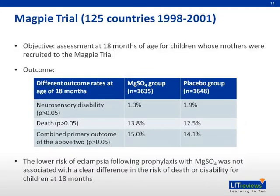The MAGPIE trial — the Magnesium Sulfate for the Prevention of Eclampsia trial — was conducted from 1998 to 2001 in around 125 countries, to evaluate the effectiveness of magnesium sulfate as an anticonvulsant for preeclamptic patients. The MAGPIE trial results show that magnesium sulfate halves the risk of eclampsia and reduces the risk of maternal death, and there do not appear to be substantial harmful effects to mother or baby in the short term. In the follow-up trial on children born to preeclamptic mothers, assessment of long-term effect of in utero exposure to magnesium sulfate at 18 months of age found no substantial differences in death rate or risk of neurological impairment between the magnesium sulfate and placebo groups. The lower risk of eclampsia following prophylaxis with magnesium sulfate was not associated with a clear difference in the risk of death or disability for children at 18 months.